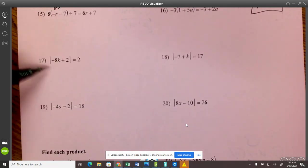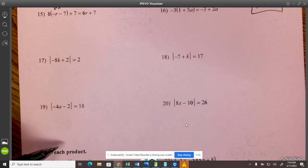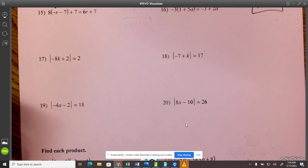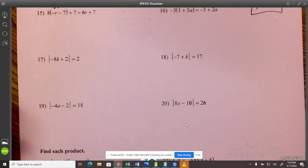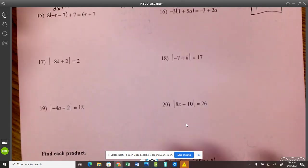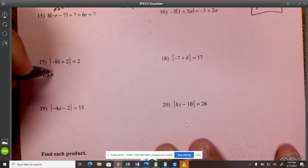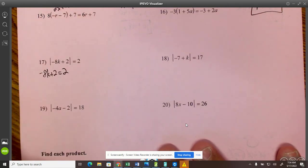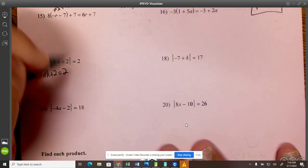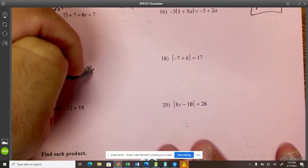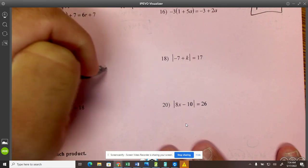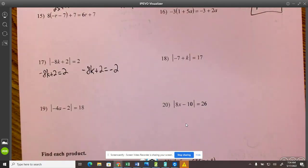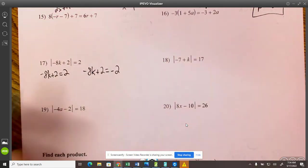Now, when you see these, this is just an absolute value problem. An absolute value is the distance from 0. So if I say how far is 3 from 0, well, that's 3. But that's also the same distance as negative 3 to 0. So when you set up these problems, not only does negative 8K plus 2 equal 2, but since it's absolute value, negative 8K plus 2 can also equal negative 2. Because these both have equal amount of distance from 0.